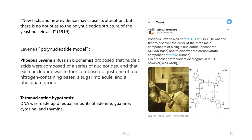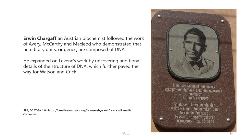In fact, Levene was the first to discover the order of the three main components of a single nucleotide and to discover the carbohydrate component of RNA. Another of his hypotheses, known as the tetranucleotide hypothesis, however, turned out to be wrong, where he stated that DNA was made up of equal amounts of adenine, guanine, cytosine, and thymine. It is important to know about this hypothesis because soon we will know the exact composition of a DNA molecule through the work of Erwin Chargaff.